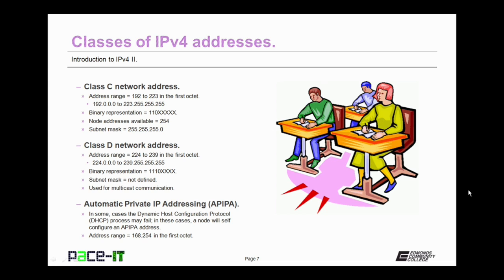The last class of address you need to concern yourself with is the Class D network address. It has an address range of 224 up through 239 in the first octet, ranging from 224.0.0.0 up through 239.255.255.255. That first octet has a binary representation of 1110, so the first four bits are always 1110. Subnet masks are not defined for Class D networking, and Class D addresses are used for multicast communication.